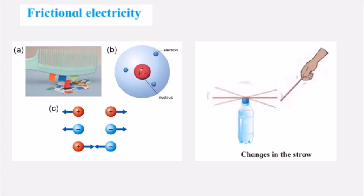You can take a few straws and keep them on a bottle, then take another straw near those straws — nothing will happen. Now rub that straw against a woolen cloth and take it near the other straws; you will see that they start to move. This is because an electrically charged object attracts an uncharged object. When you rub the straw against the woolen cloth it becomes electrically charged, and the straws on the bottle are not charged. A charged object attracts uncharged objects, and repulsion is used as a test for identifying an electrically charged object.